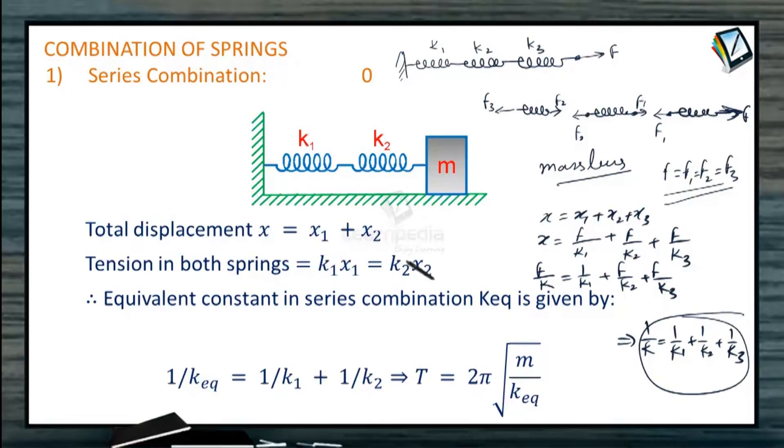So reciprocals are added to get the reciprocal of the equivalent. So here you can see that since reciprocals are added and then the final result is reciprocal of that, it means out of K1, K2, K3 whichever is the smallest K the result is going to be even smaller than that.